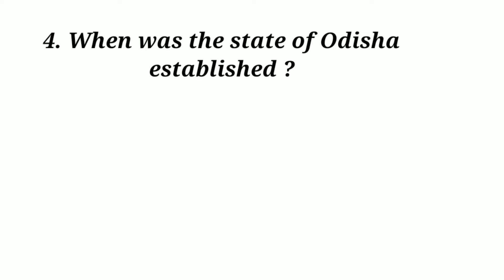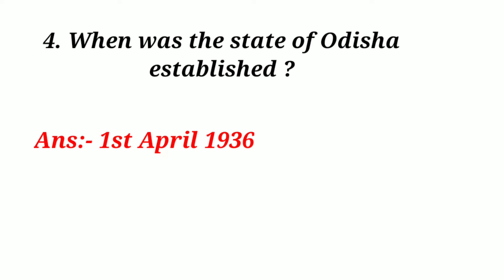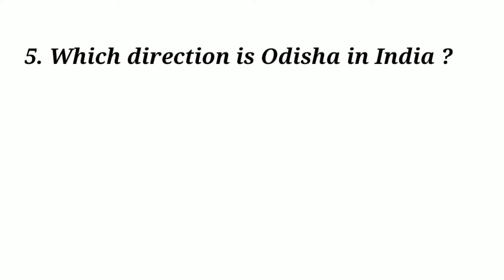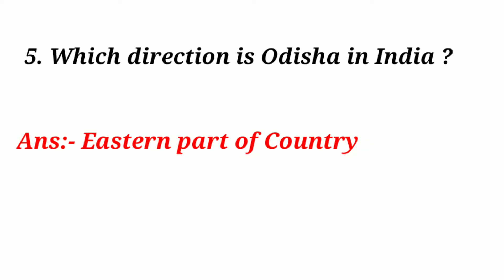When was the state of Odisha established? Answer: 1st April 1936. Which direction is Odisha in India? Answer: Eastern part of the country.